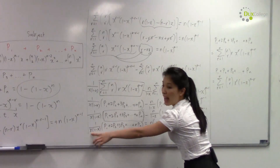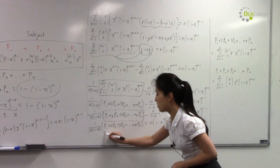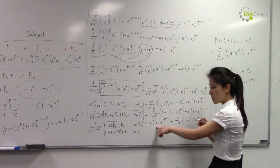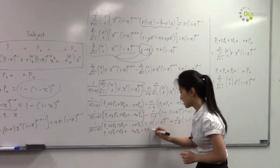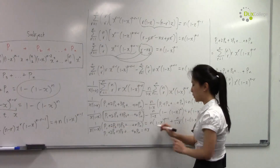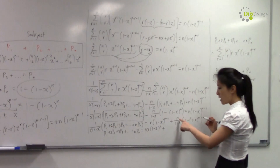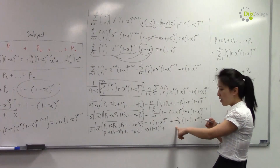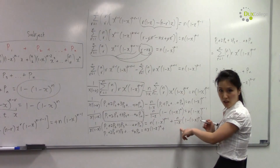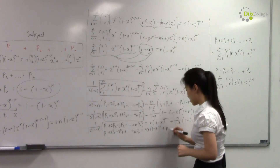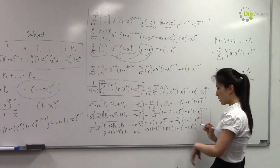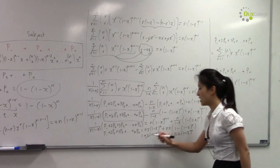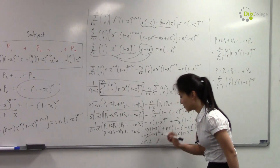The next step is to multiply both sides by x·(1-x). On the right-hand side: nx·(1-x) times the expression gives nx, since the (1-x) terms cancel with the n/(1-x) factor. Expanding the bracket on the left confirms the remaining terms cancel, leaving nx. Therefore p1 + 2p2 + 3p3 + ... + n·pn = nx, completing the proof.